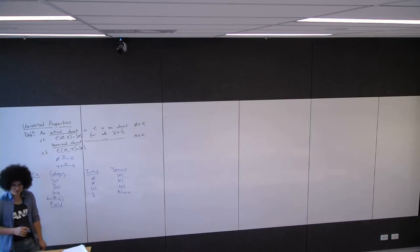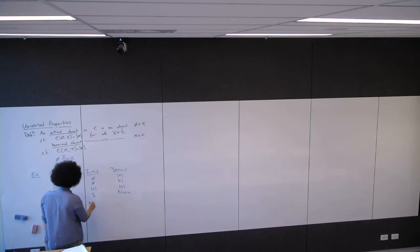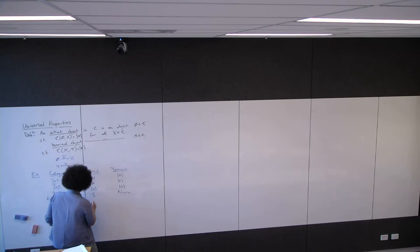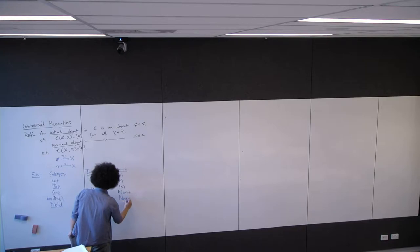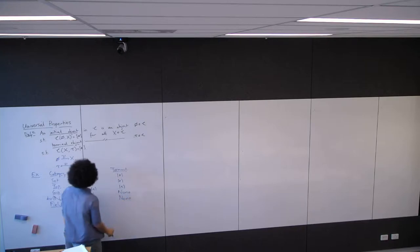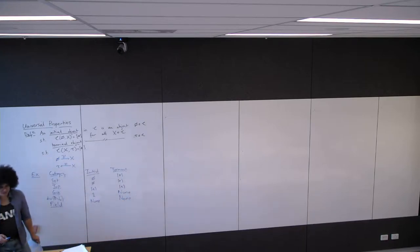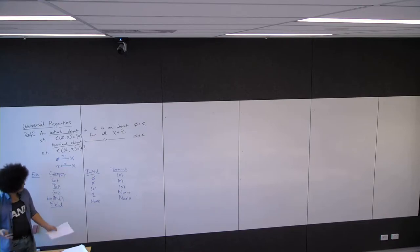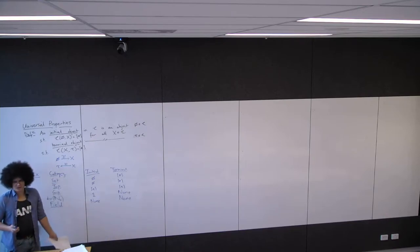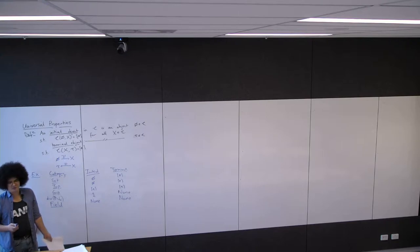The reason that the category of fields has neither initial nor terminal objects is because there aren't maps between fields of different characteristics.